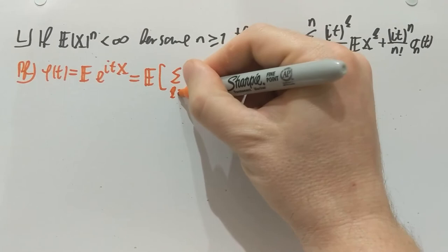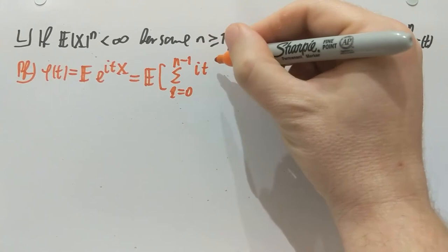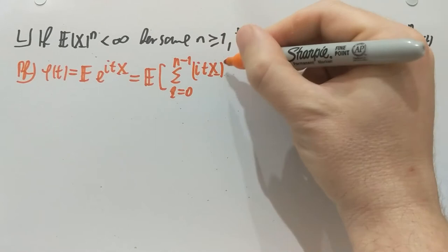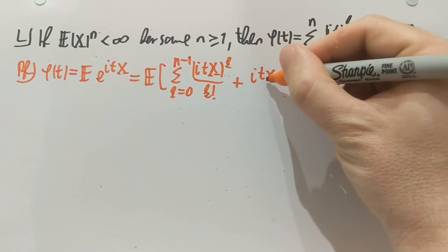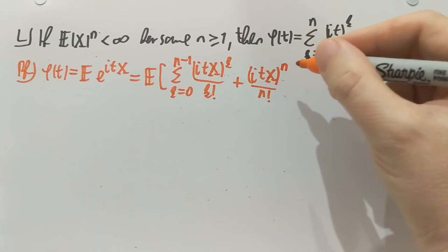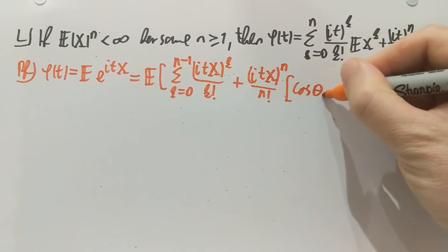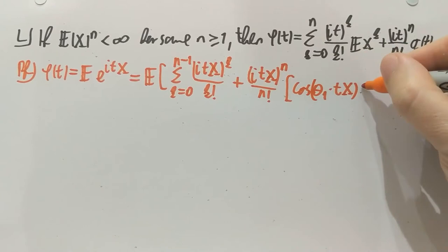I'm going to do the n minus first Taylor sum all under the expectation. So that's the first n minus one terms of the Taylor series for the exponential function. And then there is this particular way of writing the error term. So I can take the nth term here and there exists some theta one and some theta two with which the error term can be written in this way. So that's something I borrow from analysis.